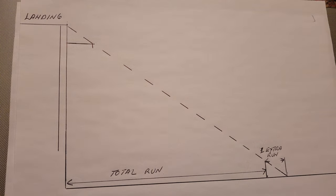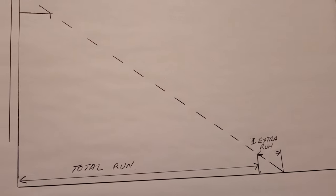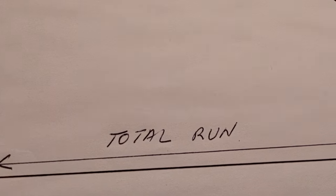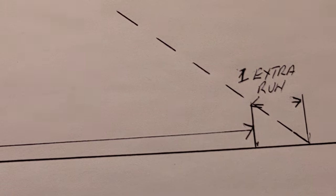Measure your total run. Then add one more tread length to that total run. Mark that length out from the vertical position of the landing.